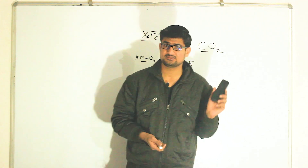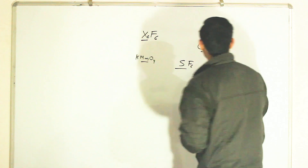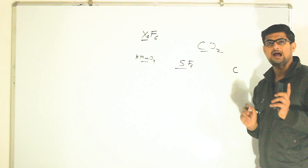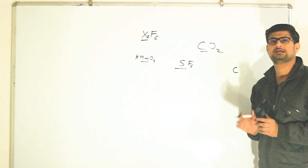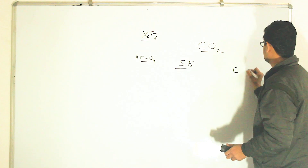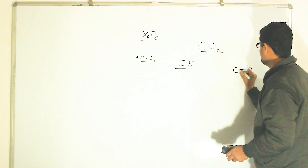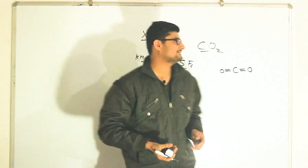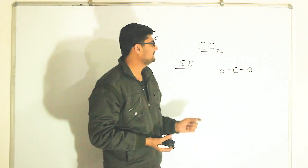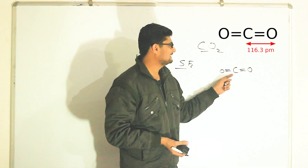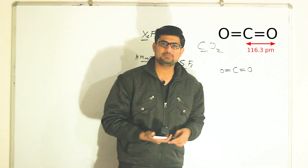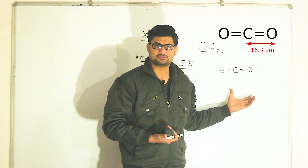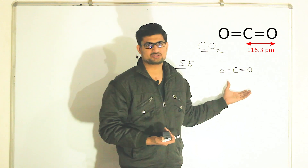Let's draw some structures, starting with CO2. In the case of CO2, we have to ensure that the central atom does not contain more than eight electrons. We have to fulfill the valences of all the side atoms, and also ensure the central atom is not containing more than eight electrons. In this case, carbon is forming four bonds, meaning it has eight valence electrons. So the structure is correct.